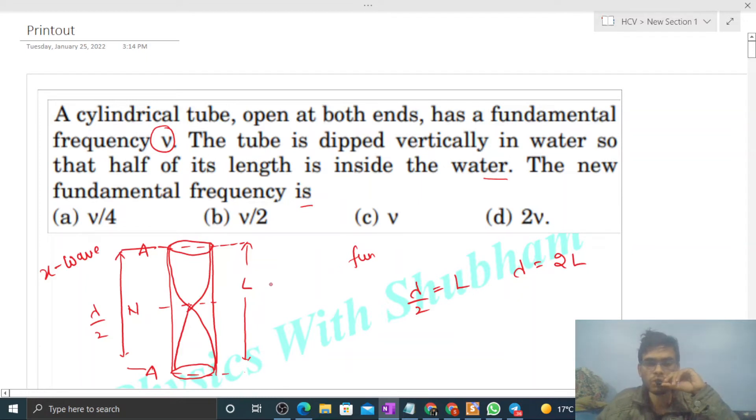Now let's say speed of the sound wave in this organ pipe is v. So v will be frequency into wavelength, so frequency will be speed divided by wavelength, so it will be v divided by 2L.